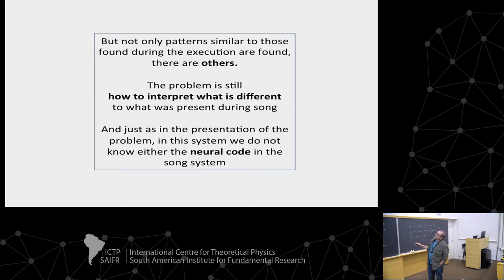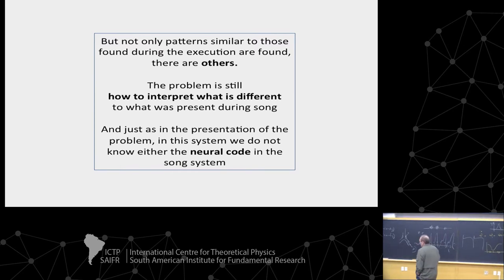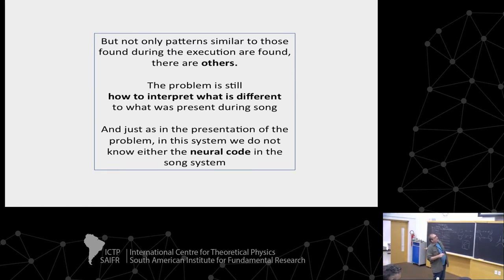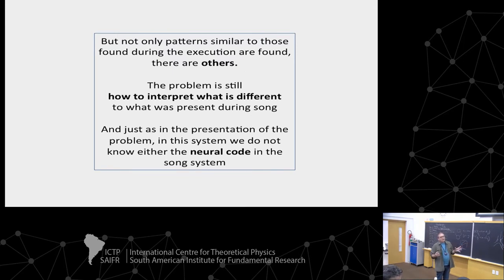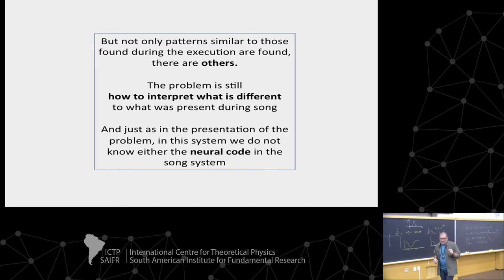The problem is that what wasn't reported in that work is that besides events where there is activity very similar to activity during actual production, there are other patterns. If you want to know what the bird is dreaming, you won't only find the bird dreaming with a song it is practicing, because the regions dedicated to song can have episodic events you cannot interpret — they are not highly correlated with what the bird does during the day. The problem remains: how do you interpret differences from what was present during the song? We have the same problem as before: we don't have the code, so we cannot interpret what is not identical to what the bird was doing.